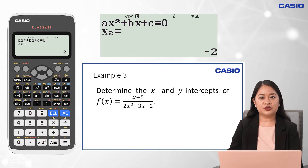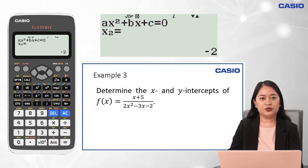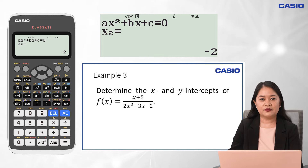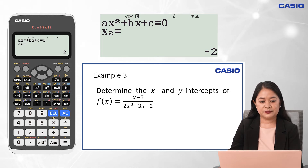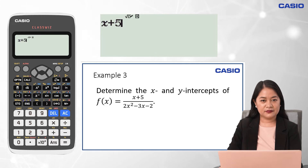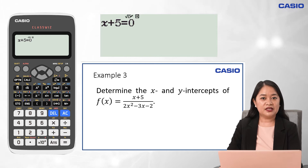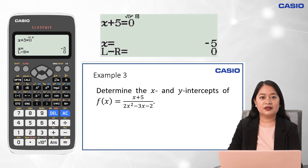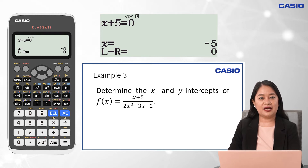For the third example, we will determine the intercepts of this given rational function. Recall that the x-intercept is the abscissa of the point where the graph intersects the x-axis, and the y-intercept is the coordinate of the point where the graph intersects the y-axis. To identify the x-intercept without graphing, we identify the zeros of the numerator. Using the Calculate menu (Menu 1), input x plus 5, then press Alpha, Calc, and Zero. Press Shift, Calc, and Equal to compute. Therefore, the x-intercept is negative 5, or the graph passes through the x-axis at point (negative 5, 0).